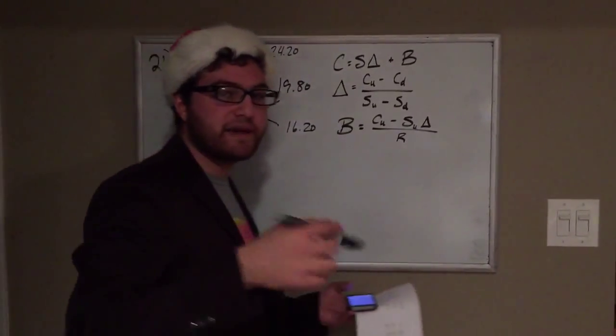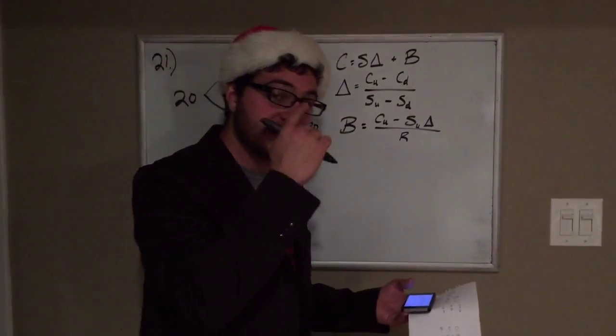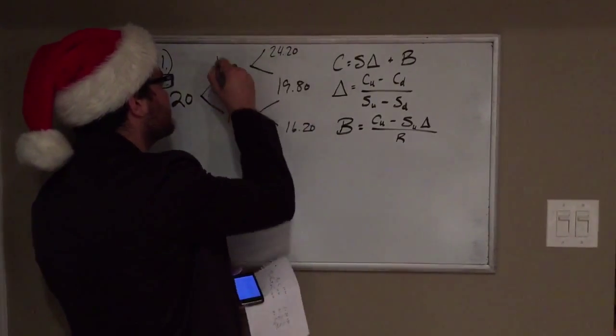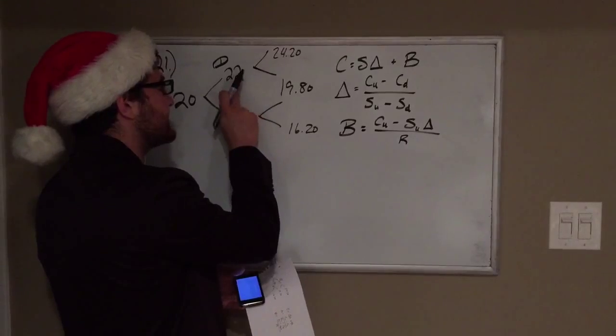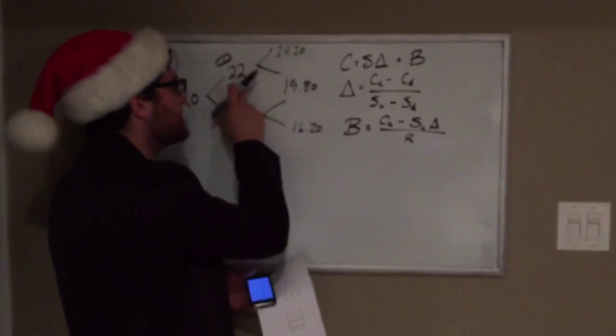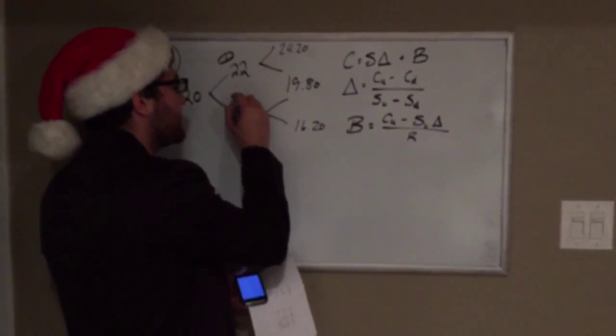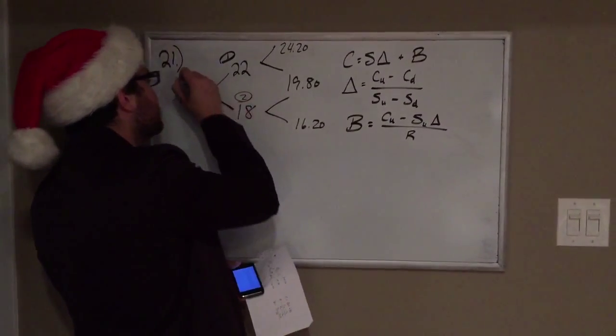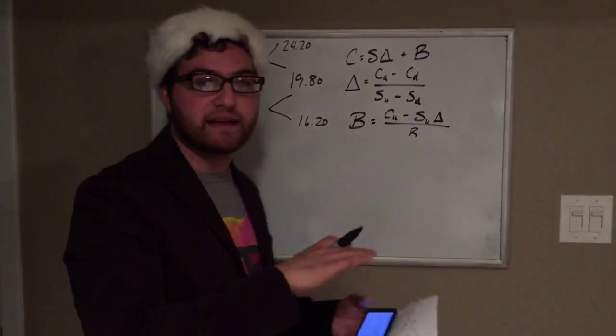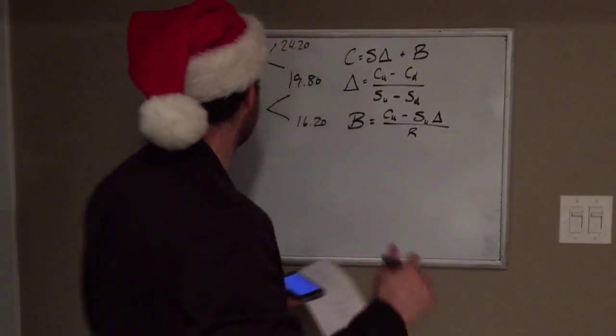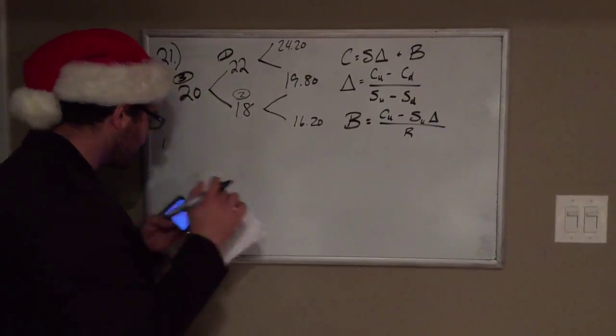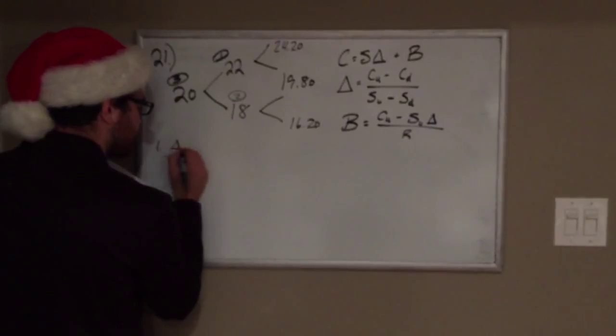We're going to have to do the same process three times to figure out the answer to this problem. We're going to go backwards. So we're going to figure out the price of the call after three months for 22 if it goes up and for 18 if it goes down. And then finally we'll figure out the price of the call at the beginning of both periods. For the first one, let's figure out the hedge ratio or delta.